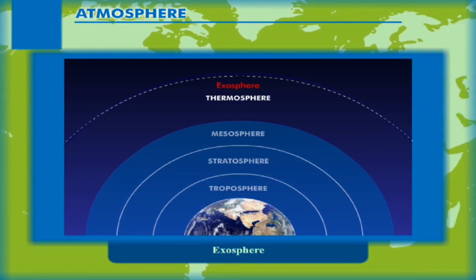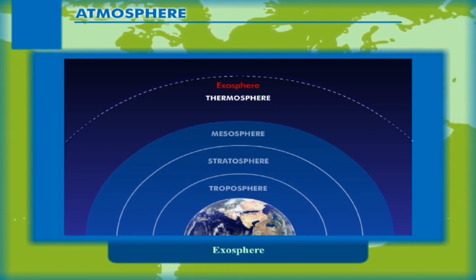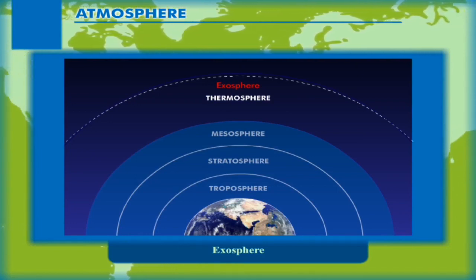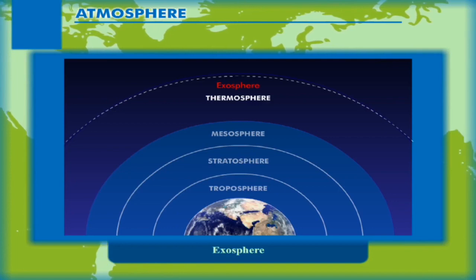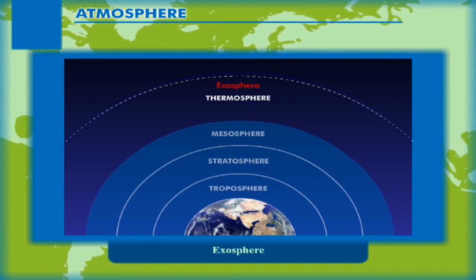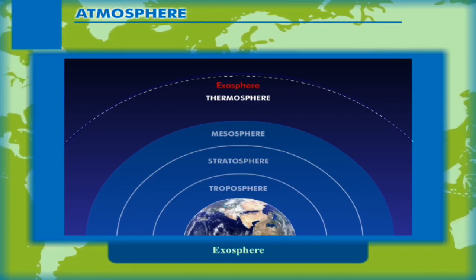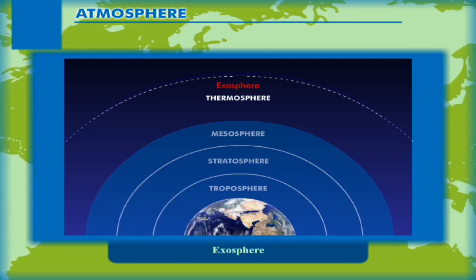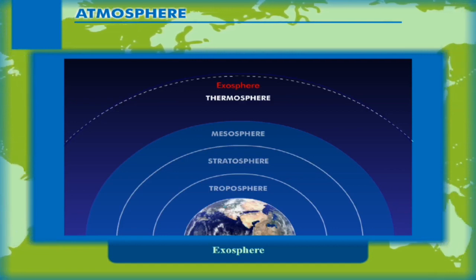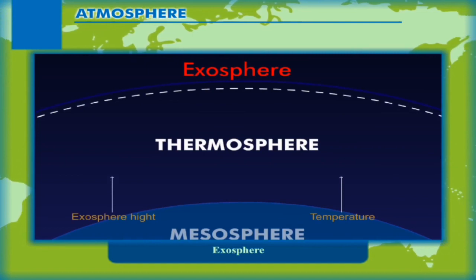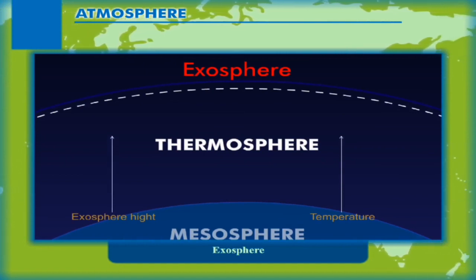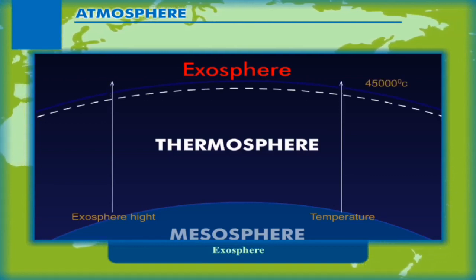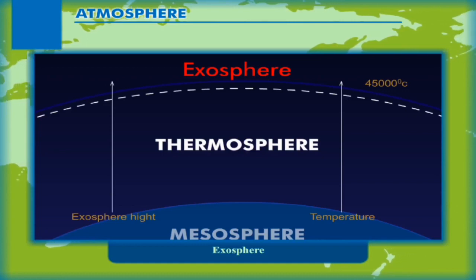Exosphere: The outermost layer of the atmosphere is called the exosphere. The air thins in this layer until it ultimately merges into outer space. The temperature increases rapidly in this layer because of solar radiation, and may reach up to 4500 degrees Celsius at its outer limit.